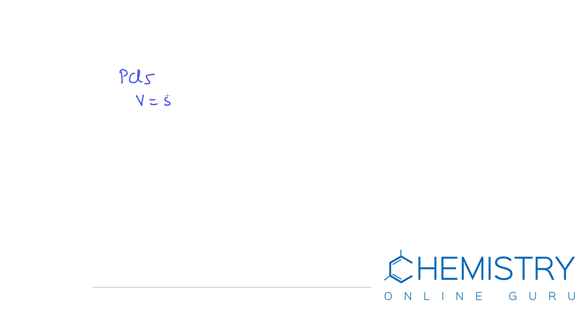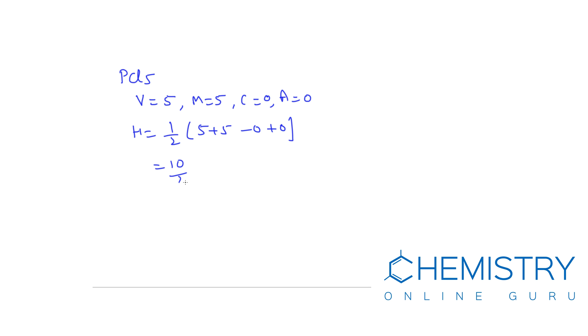Another example is hybridization in PCl₅. The number of valence electrons in phosphorus is 5, so V equals 5. Cl is monovalent and 5 Cl atoms are attached to P, so M equals 5. C equals 0 and A equals 0. H equals one-half times (5 plus 5 minus 0 plus 0) equals 10 divided by 2, which equals 5. When H equals 5, hybridization is sp3d.